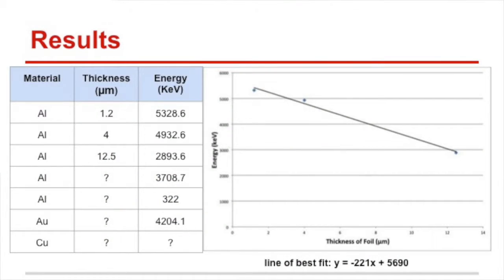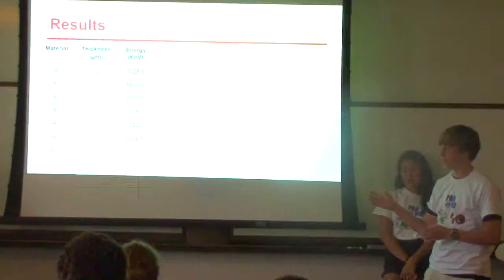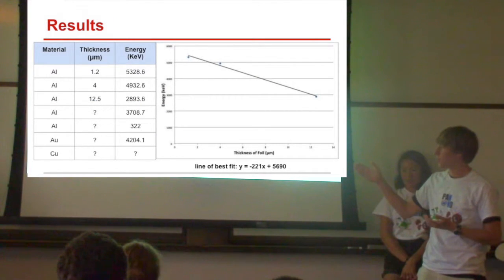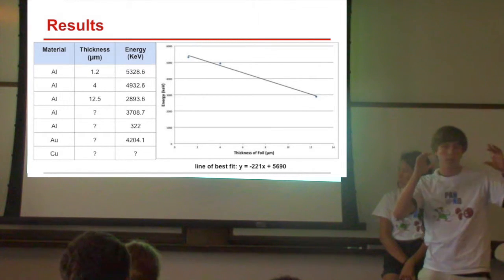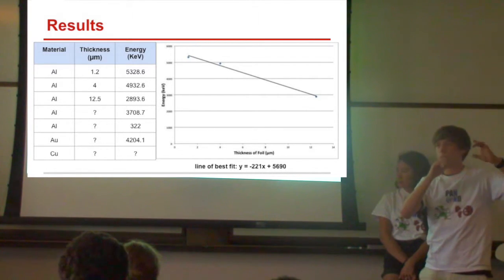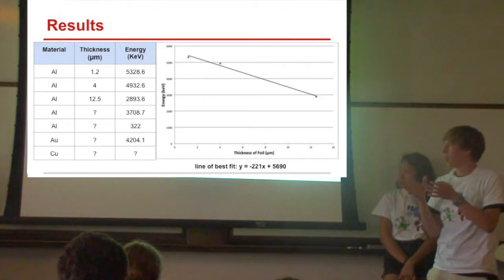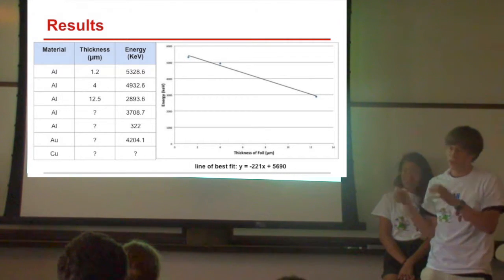We made a table. This showed all of our materials that we used—the foils. We started out with the source, calibrated it, and then we used three aluminum foils. These all had different thicknesses ranging from 1.2 microns to 12.5 microns, and we measured how much energy from the alpha particles was getting through to our sensor. From this, we were able to make a graph with these three points showing essentially the relationship between the amount of energy that gets through and the thickness of the foil.